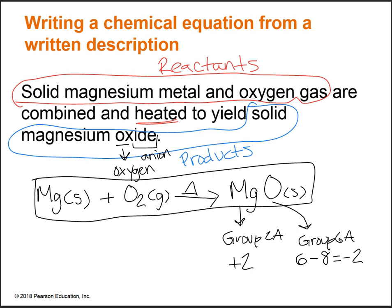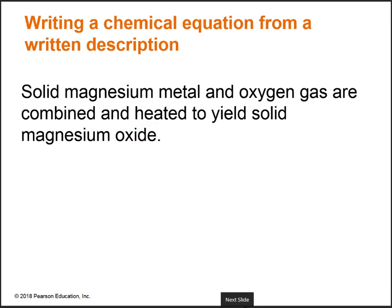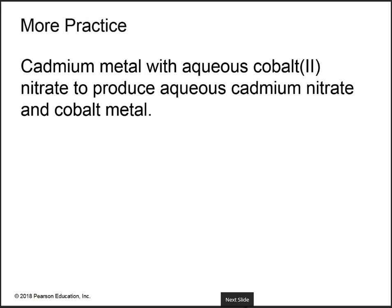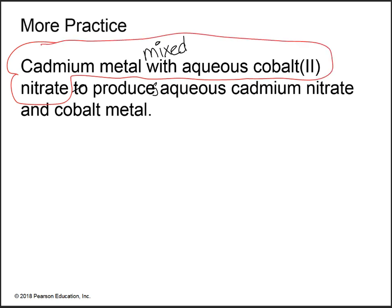You're taking a paragraph and changing it to one line of text — practice, practice, practice. Here's another example: cadmium metal with aqueous cobalt 2 nitrate. We need to separate our reactants and products. Cadmium metal mixed with aqueous cobalt 2 nitrate to produce — we stop before 'produce.' Those are our reactants. Continuing: produces aqueous cadmium nitrate and cobalt metal — those are our products.